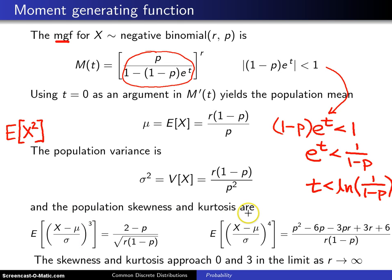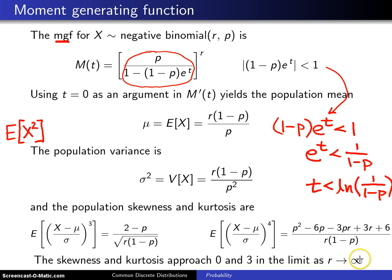Next, the population skewness — taking another derivative and doing some manipulations — will look like the expression shown. In the limit as r goes to infinity, the skewness will approach 0 and the kurtosis will approach 3.